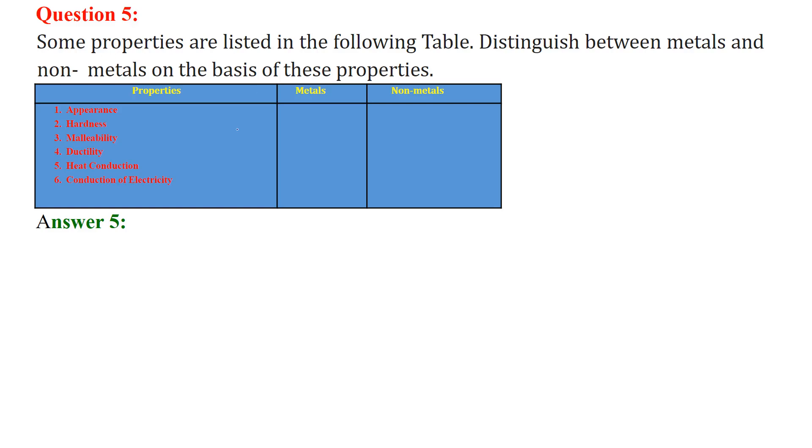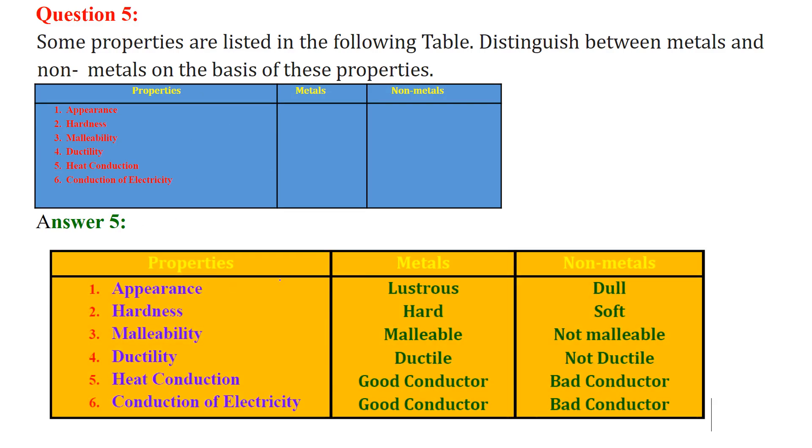Some properties are listed in this table. We need to distinguish between metals and non-metals on the basis of these properties. So appearance, metals are lustrous, non-metals are dull. Hardness, metals are hard, non-metals are soft. Malleability, metals are malleable and non-metals are non-malleable. Ductility, metals are ductile, non-metals are non-ductile.